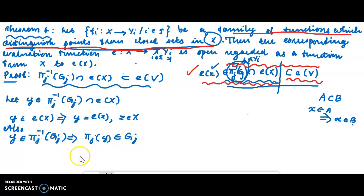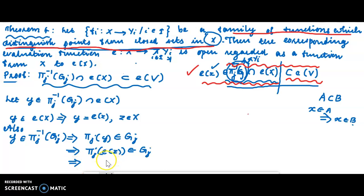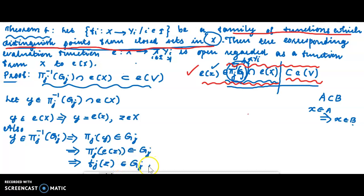pi_j of Y element of G_j implies pi_j composed with the evaluation function, and then E(z): pi_j of E(z) element of G_j. pi_j composition with the evaluation function gives f_j composition with the evaluation function. f_j of E(z) element of G_j, for E(z) element of X.